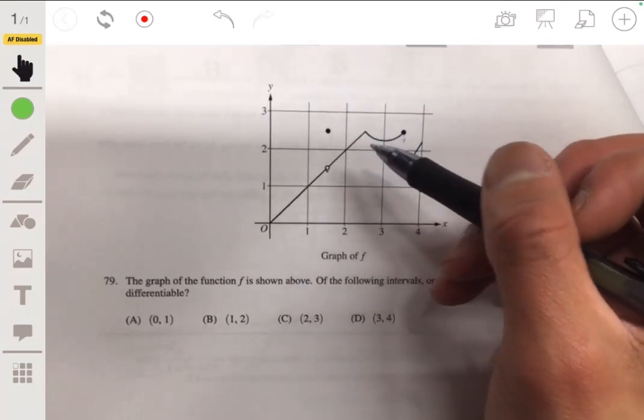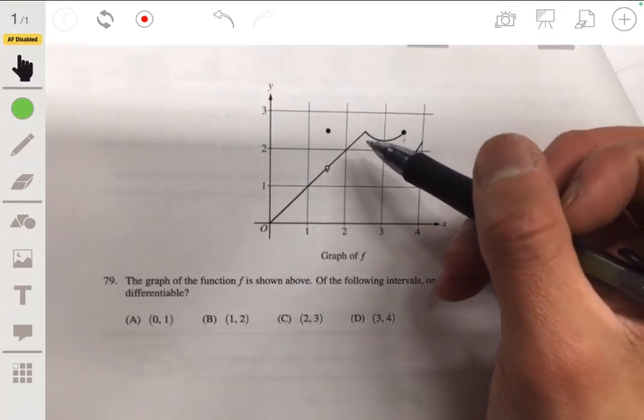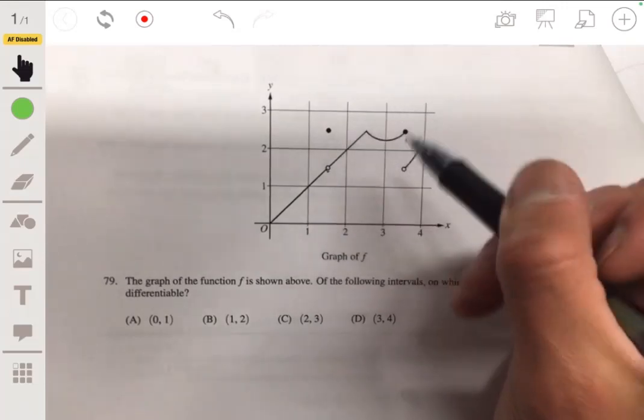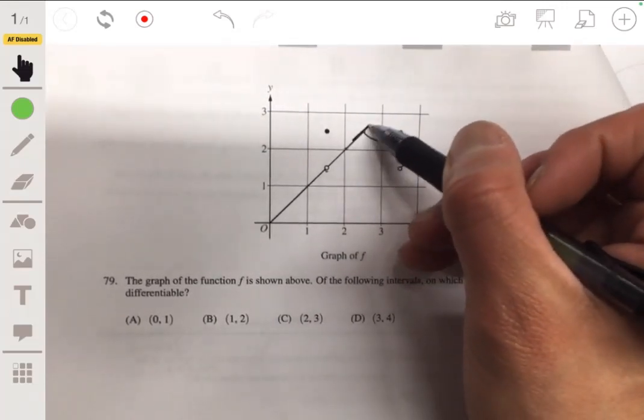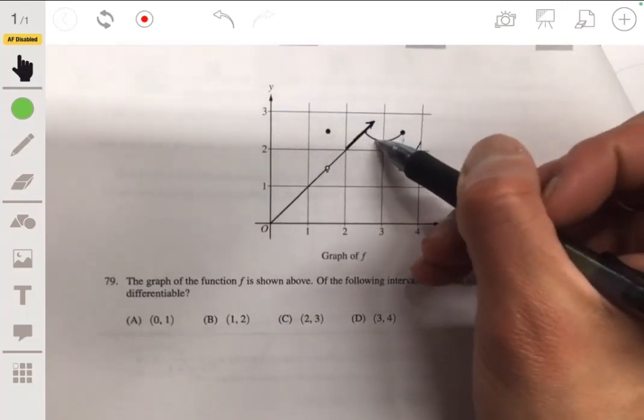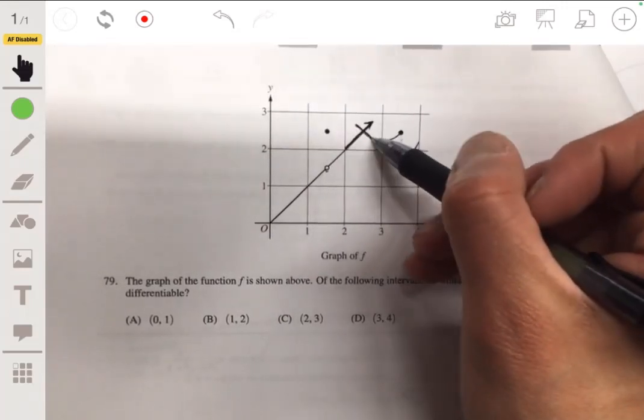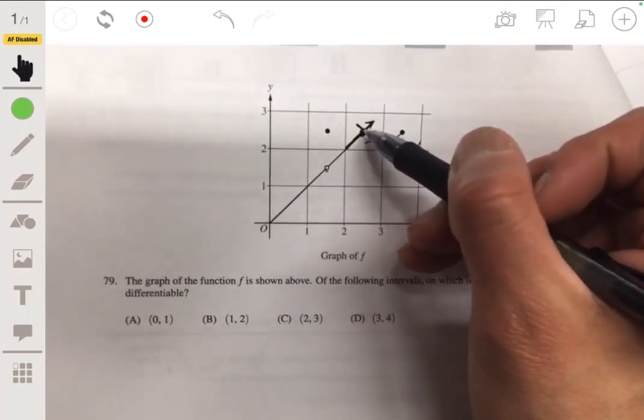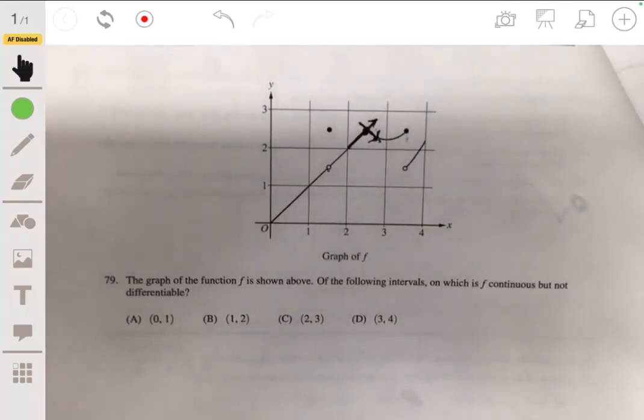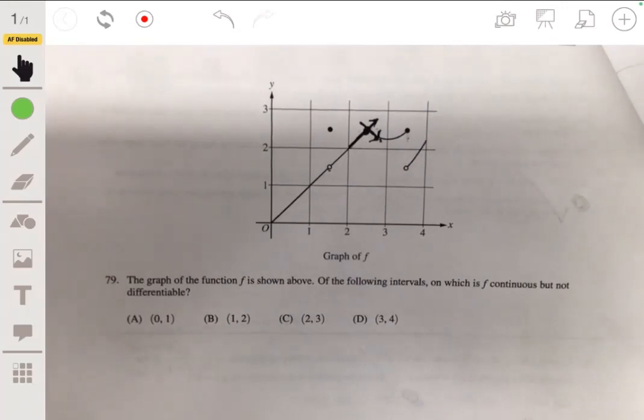Now it's not going to be differentiable at points where you have a sharp curve, like over here. Because when you're coming from the left, the slope is going to be something like that, but on the right side, on this side, the slope is negative. So the slope from both sides when you approach this point here is not equal, so it's not going to be differentiable at that point there.